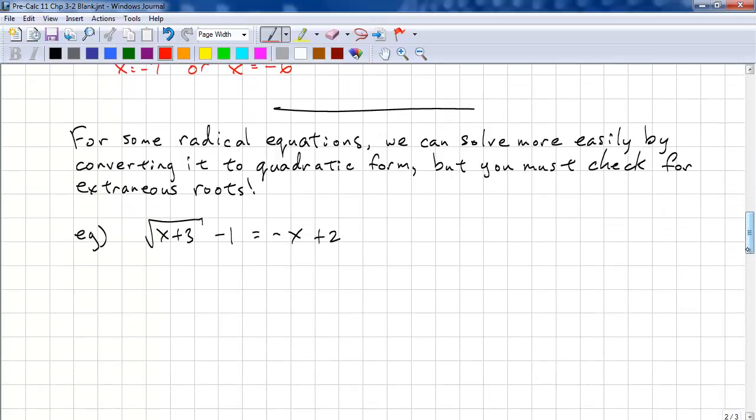Now, for some radical equations, we can solve more easily by converting it to quadratic form. However, you need to check for extraneous roots, or extraneous answers. So, we can solve this one by isolating the radical. x plus 3, negative x. We have plus 2, and this becomes plus 1 on the other side, so we have plus 3. Now, we square both sides. And this just becomes x plus 3.